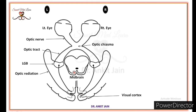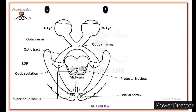Here is the midbrain. At the posterior end of the midbrain, the superior colliculus is found. Just anterior to the superior colliculus, the pre-tectal nucleus is found. Anterior to the pre-tectal nucleus, the Edinger-Westphal nucleus is found. This Edinger-Westphal nucleus is the parasympathetic component of the oculomotor nucleus.